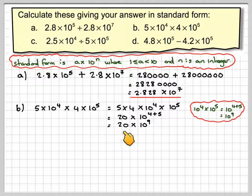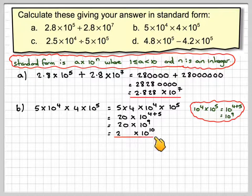This is not standard form because this number is not between 1 and 10. So we're going to have to move the decimal point 1 place this way and then add 1 to the power. So the final answer here is 2 times 10 to the 10.